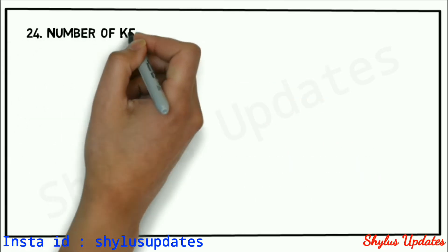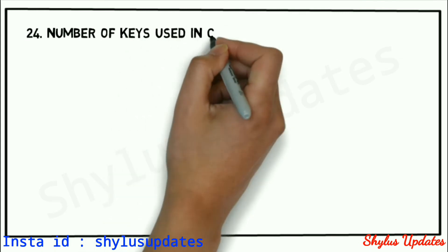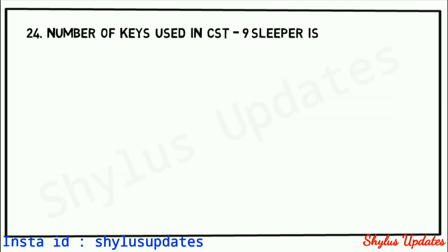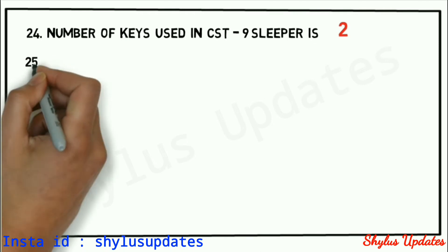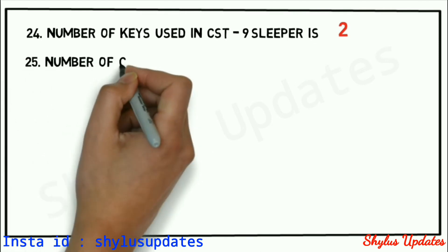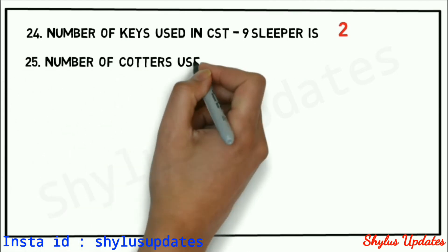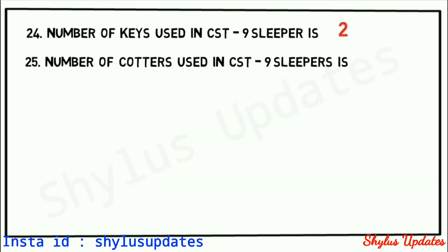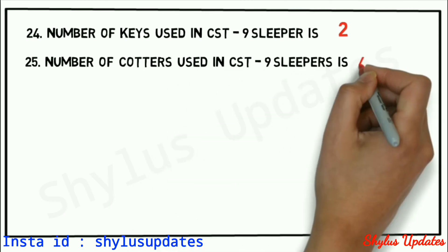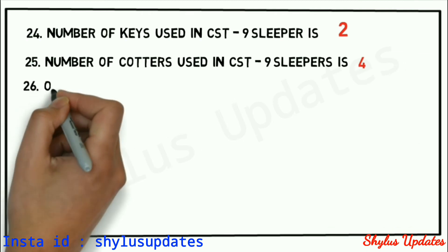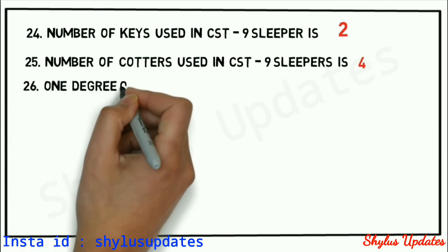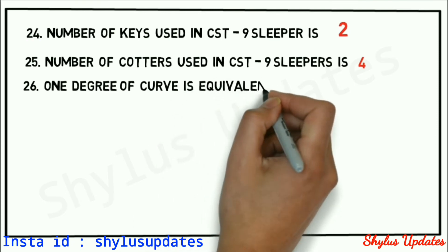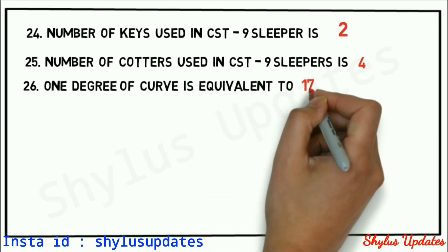Number of keys used in CSD 9 sleeper is 2. Number of cotters used in CSD 9 sleepers is 4. One degree of curve is equal to 1750 divided by R.